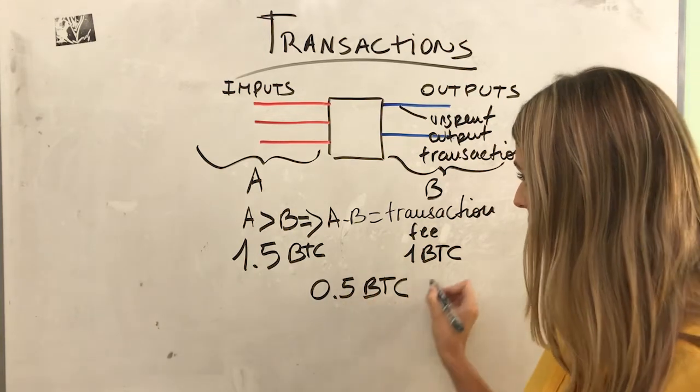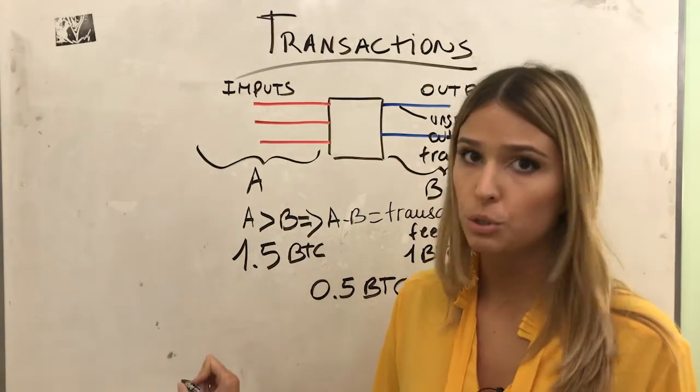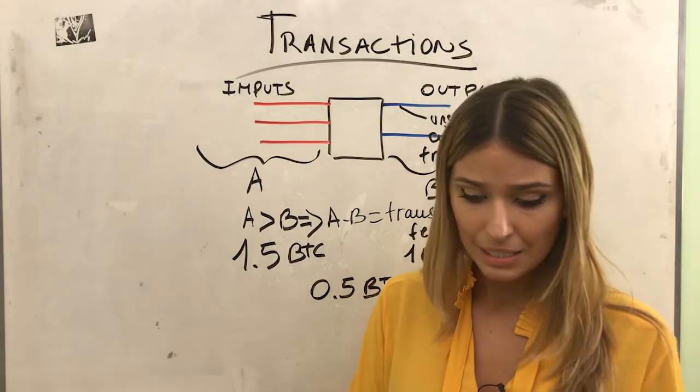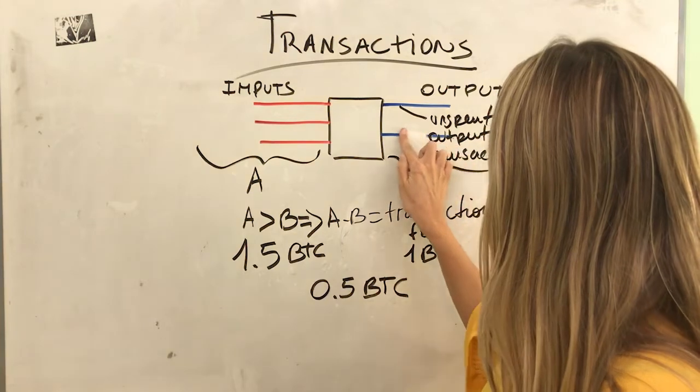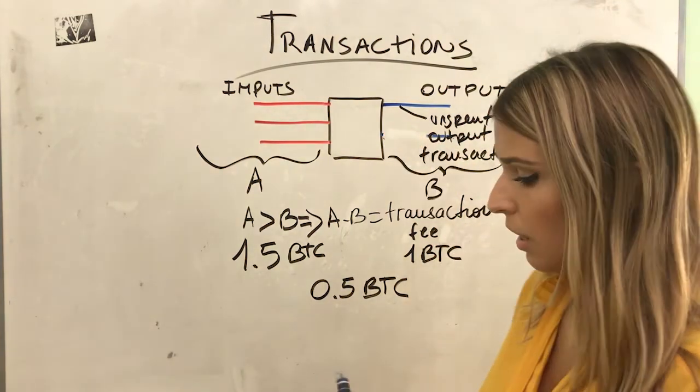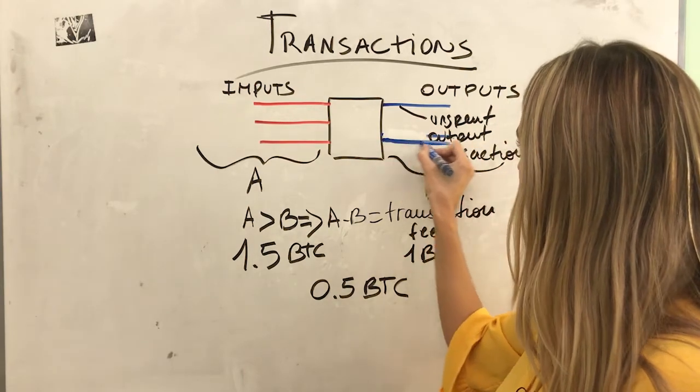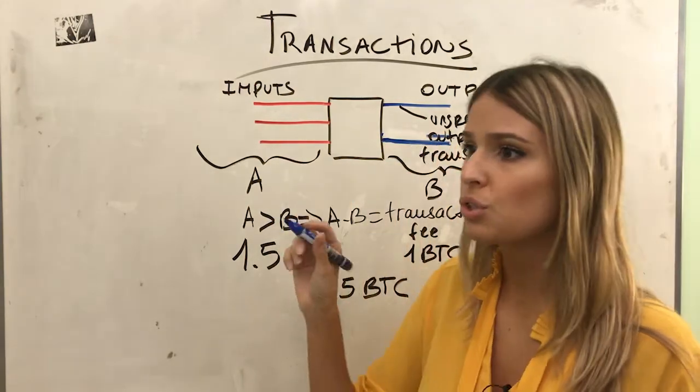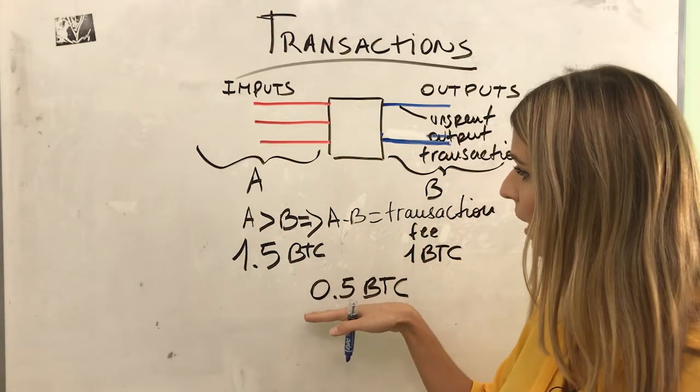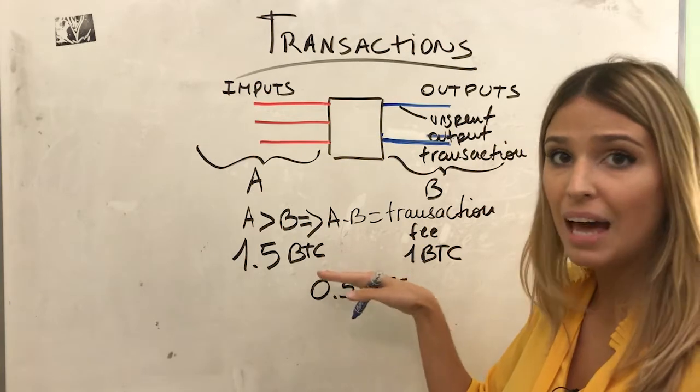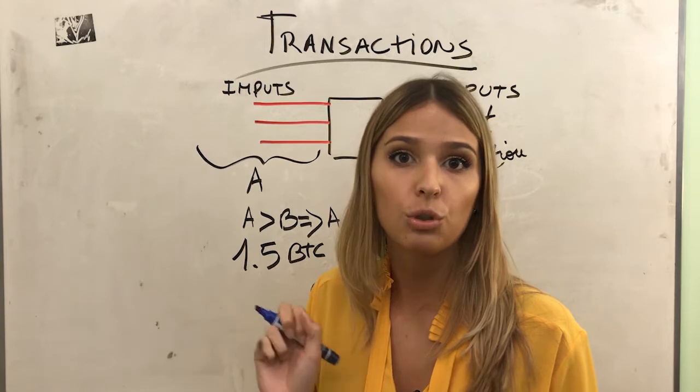0.5 Bitcoin is a very high transaction fee for the amount I want to be sending. So in this case, what we're going to do is, let's say we don't have this output here, we're going to add another output to this transaction. This means we are going to send the remainder, the difference between these two which is way too high, we're going to send a little bit of that to myself again, to another address that I control.